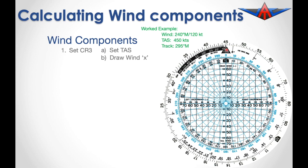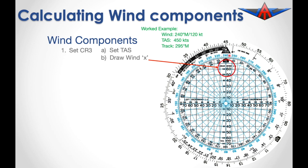The next thing we need to do is to draw the wind. I like to draw a little X where the centre of the X marks the exact wind position. To make this easier, you may find it simpler to rotate the inner wheel so that the direction of the wind of 240 is directly above that TC mark. We then come up the scale to identify 120 knots — 120 is at this mark here — and we mark a little X directly on that vertical line so that the centre of the X is at 120 knots.